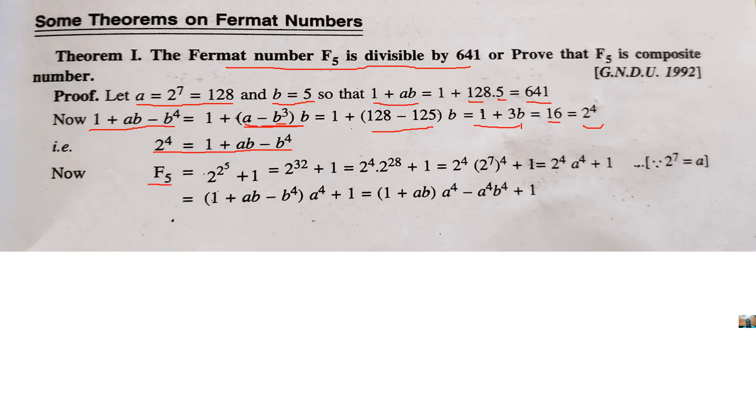Now, it means 2 raised to power 4 can be written as 1 plus ab minus b raised to 4. Now, we have F5. We know that Fermat Numbers are the form 2 raised to power 2 raised to power n plus 1. So, here n we have used 5.